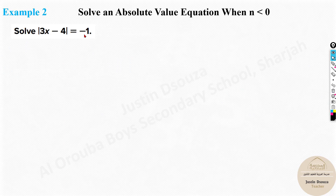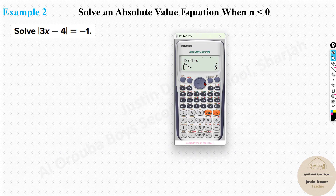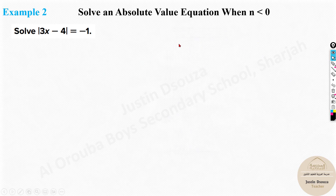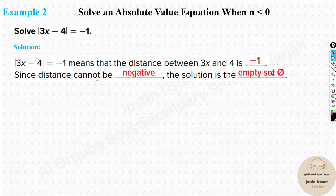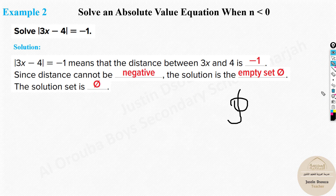Now think: what about the absolute value of 3x minus 4 equals negative 1? If you try this in the calculator it says it can't be solved — it's a null set, meaning no solution. Why? Because distance cannot be negative. The magnitude of any value can never be negative. So this equation has no solution — it is a null set or empty set.